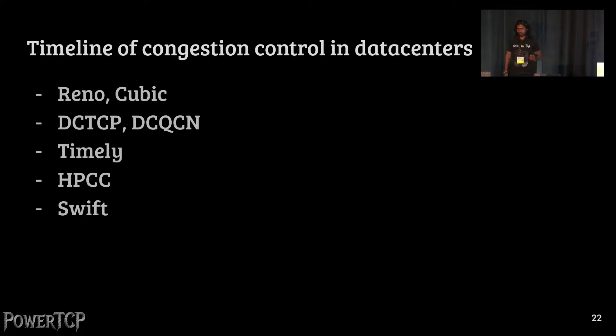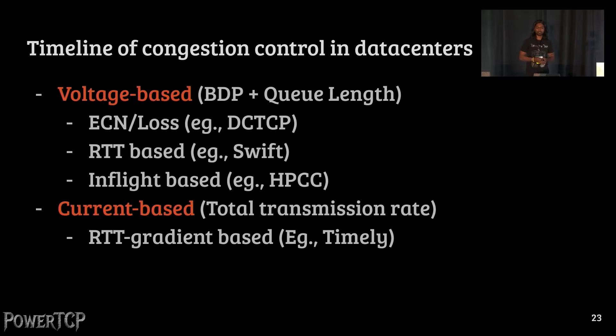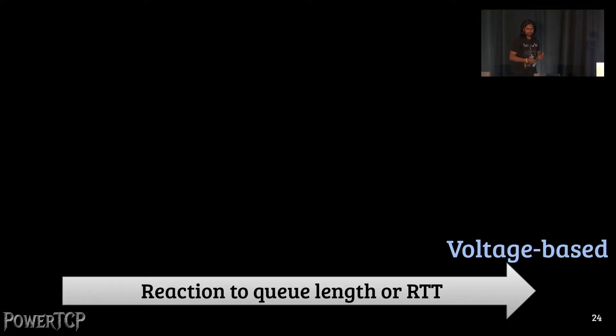Numerous algorithms were proposed in the past. We take a closer look at the fundamental rate control of each of these algorithms. And interestingly, we find most of the existing approaches can be classified into two types: voltage-based and current-based. The class of algorithms that are a function of bandwidth delay product and the queue length are what we call as voltage-based. And the class of algorithms that are a function of total transmission rate are what we call as current-based.